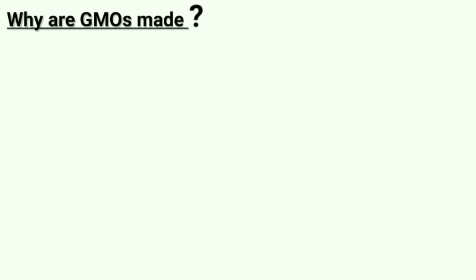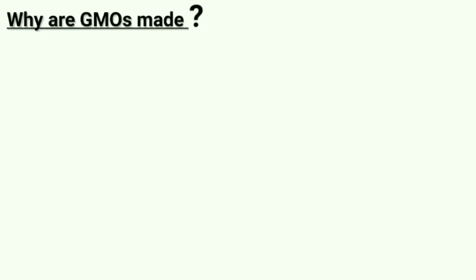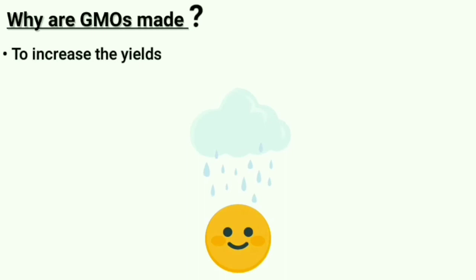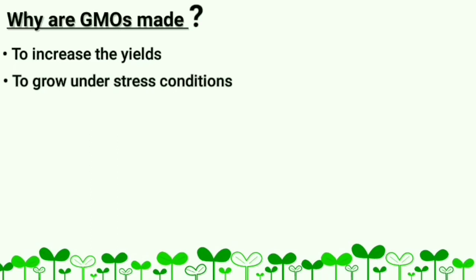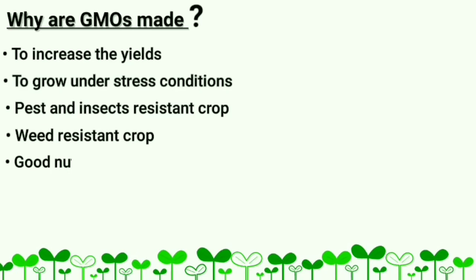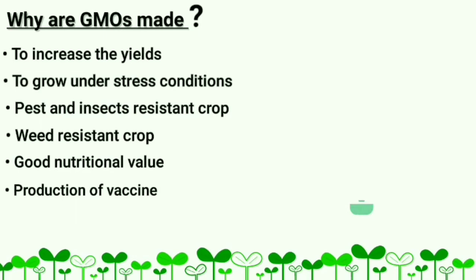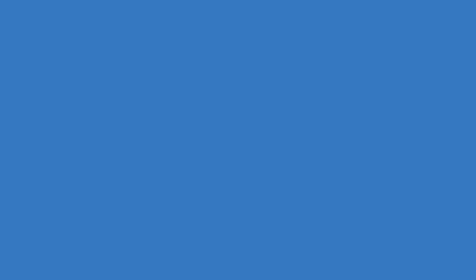Why are GMOs made? In the present condition, increasing population leads to increased demand for food, so we must increase yield by producing better quality crops on less land. Climatic change leads to unfavorable conditions for crops, so we need to grow under stress conditions. Pest and insect resistance crops, weed resistance crops, good nutritional value, and production of vaccines and antibiotics are the problems where GMO becomes the solution.